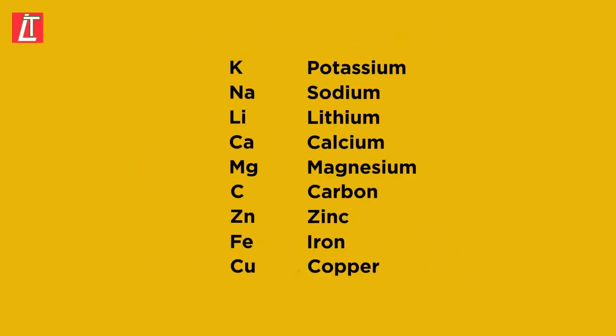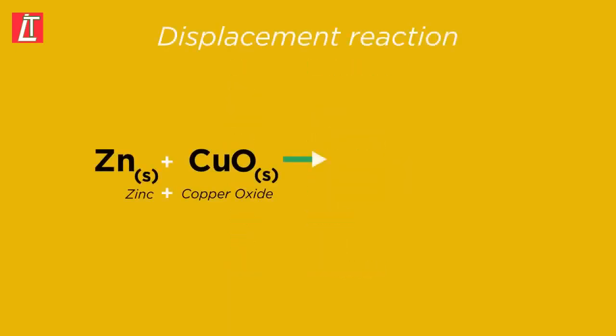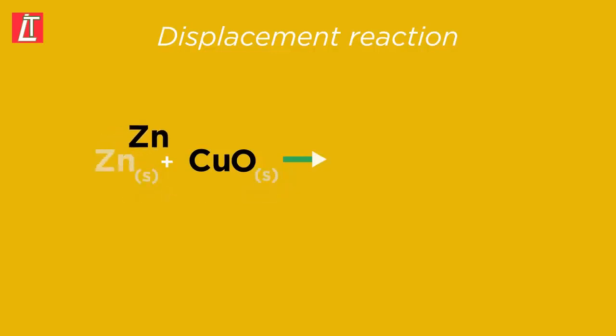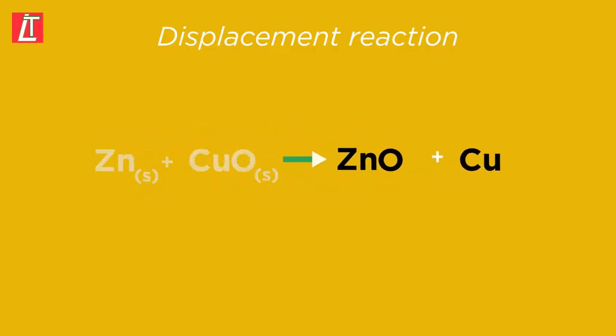Look at where the metals zinc and copper are in the reactivity series. Zinc is above copper and so is the more reactive metal of the two. So zinc, being a more reactive metal, can push out or displace copper from its compound.